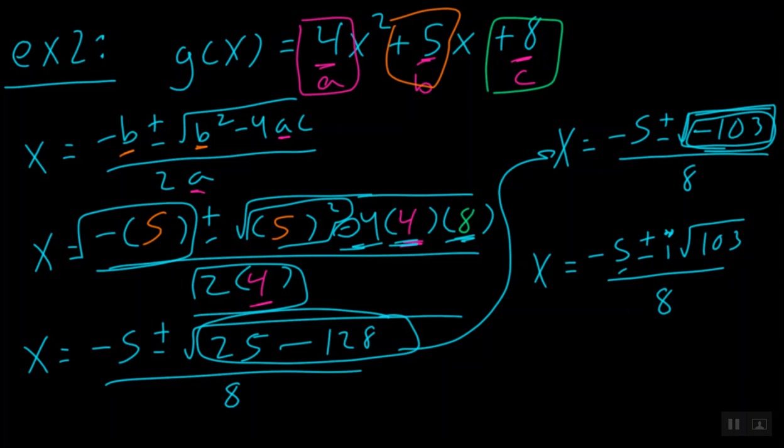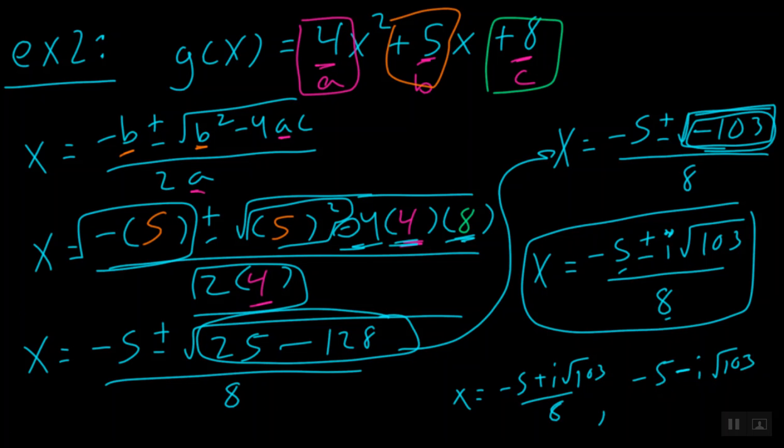Well guys, 5 can't be divided by 8, so we can't simplify, and this is straight up the answer. Now remember, if you wanted to write it out as negative 5 plus i square roots of 103 over 8, and negative 5 minus i square roots of 103 over 8, you surely could. But remember, this is the preferred way of writing it. Alright? Good luck, guys, and I hope you do well on this lesson.